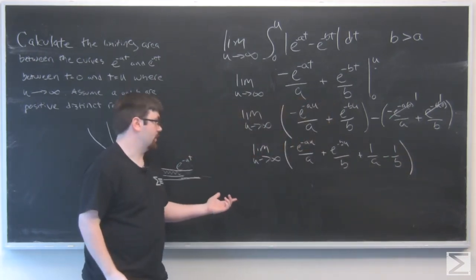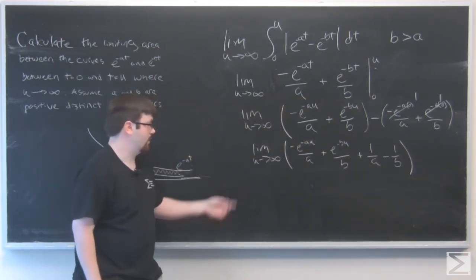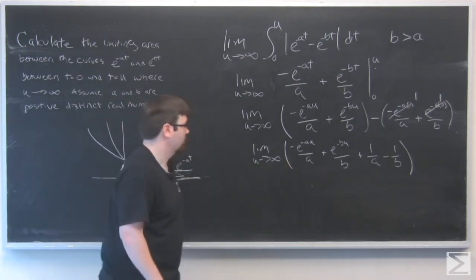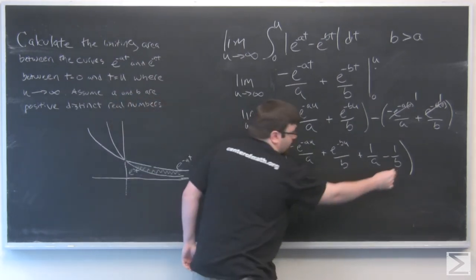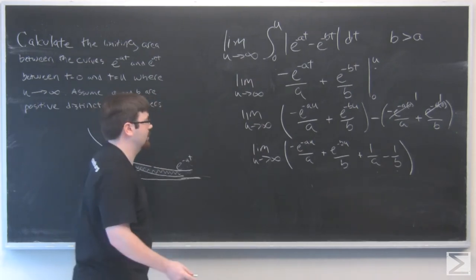So now the last step is we have to evaluate our limit as u approaches infinity. Our two terms on the right here don't have a u, so they're going to remain as is.